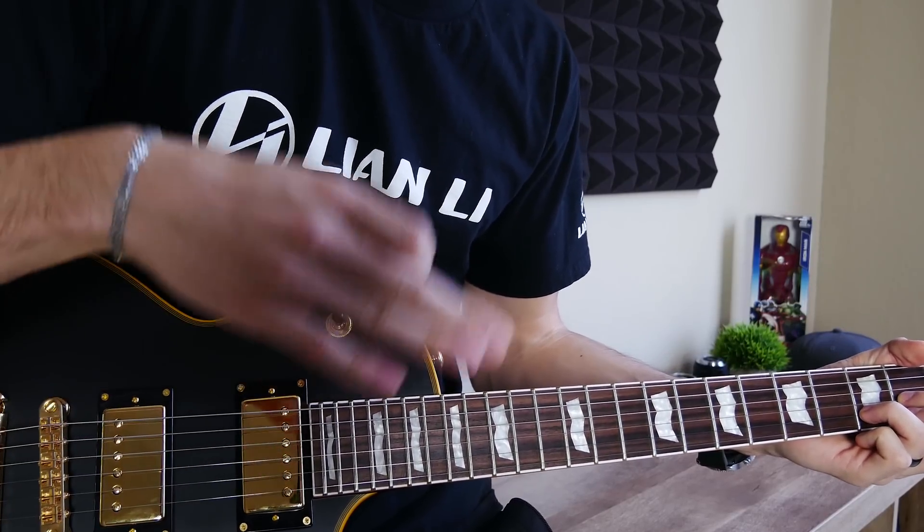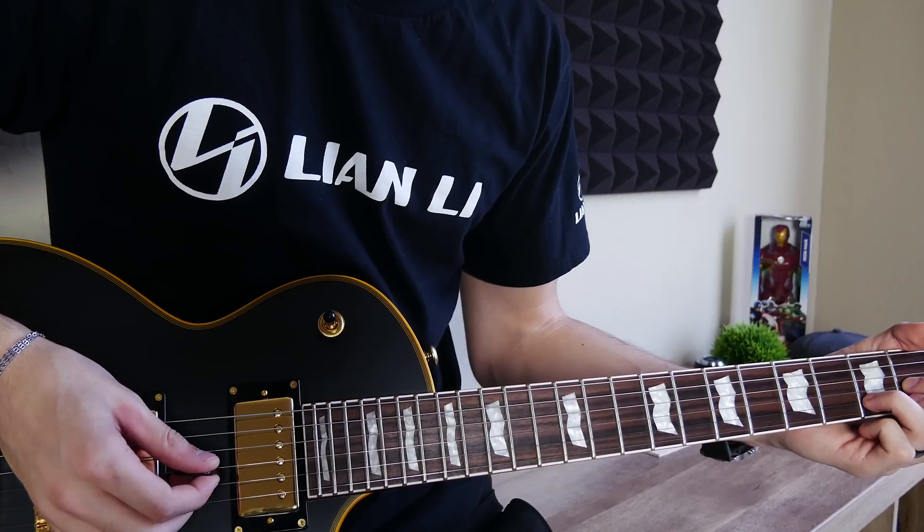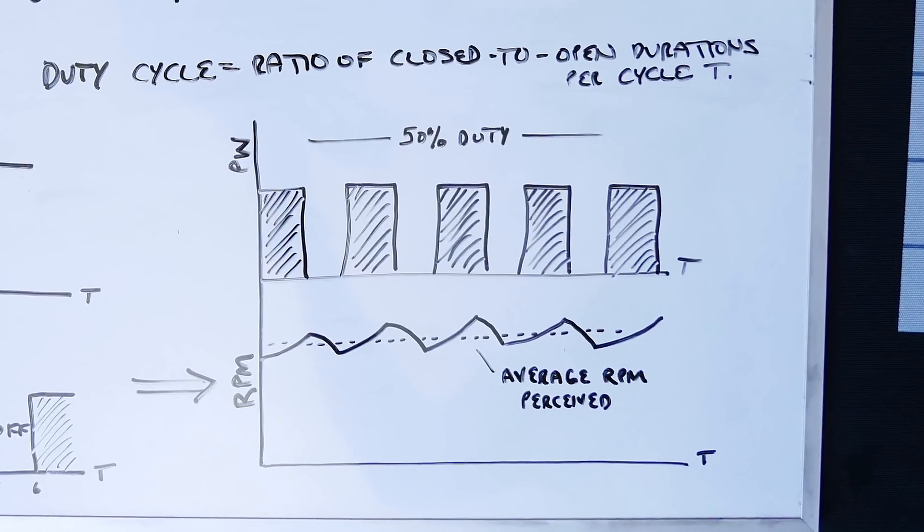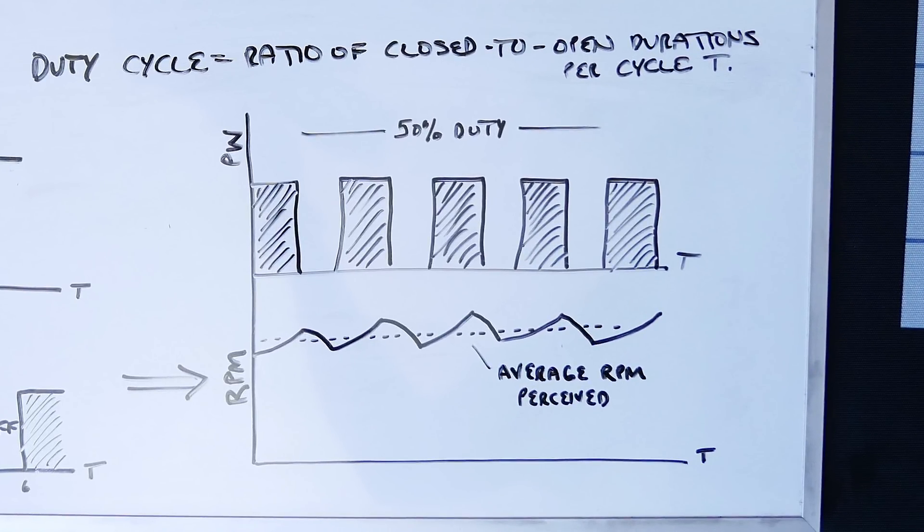And this of course translates to the fan as a higher RPM. We can see this relation graphically if we match up fan RPM and voltage versus time. Pulse Width Modulation tuned to a 50% duty cycle looks something like this with our peak voltage at 12 volts, and the dependent variable, that's rotations per minute, depicted here.